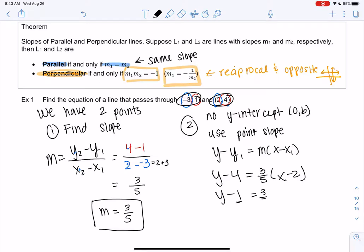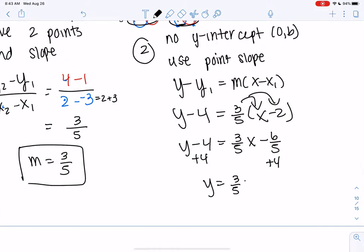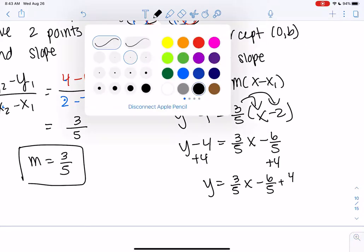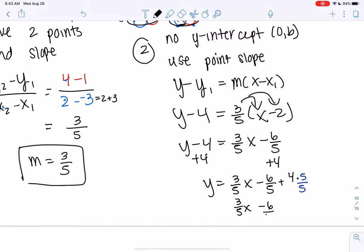If you happen to do 1, you'll do 3 fifths, x minus negative 3. Both will work and give you the exact same answer. You don't need to do both. But I'm just going to simplify this one. So distribute 3 fifths. y minus 4 equals 3 fifths x. And then 3 fifths times 2 would be 6 fifths. Negative 6 fifths. And then we're going to add 4. Might as well combine them. So 4, we'll just times by 5 over 5 to get LCD. So minus 6 fifths plus 20 fifths. So 20 minus 6 would be 14.